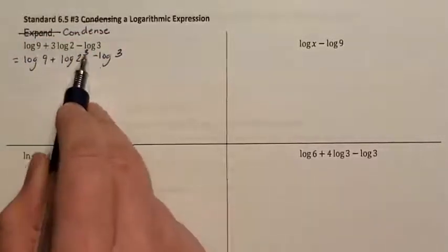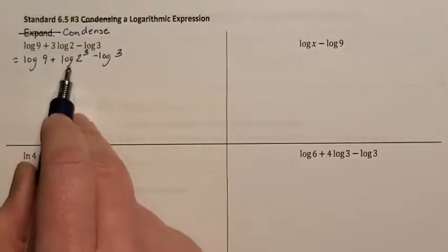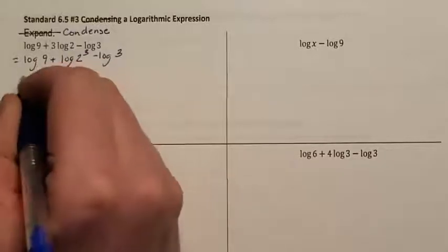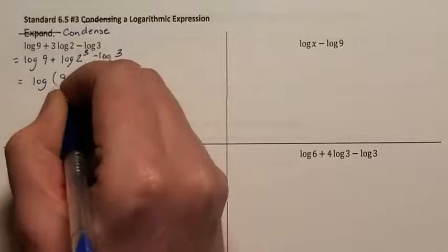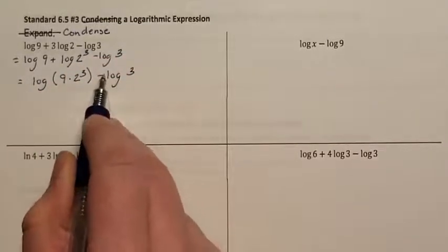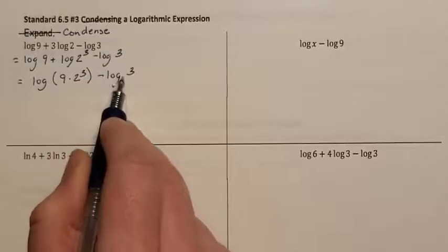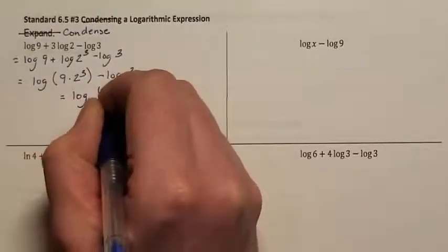Now that the 3 is the exponent, I see that these two are being added to each other. If you're being added, that meant that they were originally multiplied together. So we're going to condense the log and multiply these together. I now see that these two logs are being subtracted. If you were subtracted, that meant you were originally division. So we're going to condense the logs and divide.